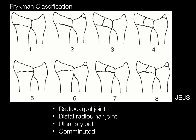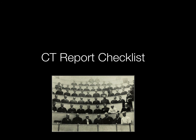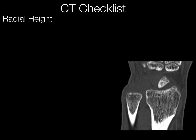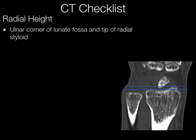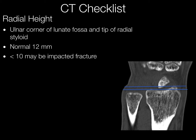The point of these slides is not to memorize classification systems, but rather to demonstrate some of the factors that go into these classifications so that we know what might be helpful to say within the report. We start with radial height. We measure from the ulnar corner of the lunate fossa of the distal radius to the tip of the radial styloid. Normally this is about 12 millimeters. If it's less than 10 millimeters, you are likely dealing with an impacted fracture.